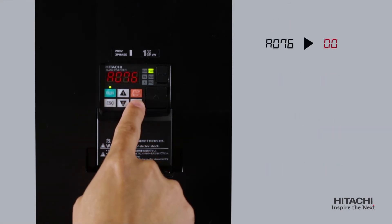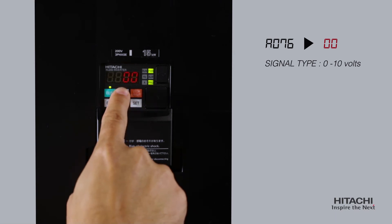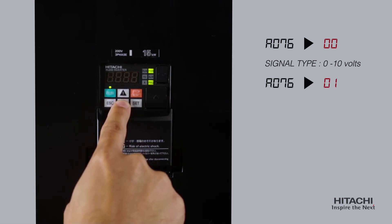A76 is the signal type selection. Please select a setting of 00 for 0 to 10 volts or 01 for a 4 to 20 milliamp signal type.